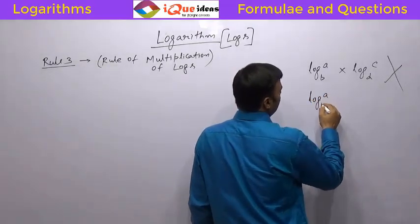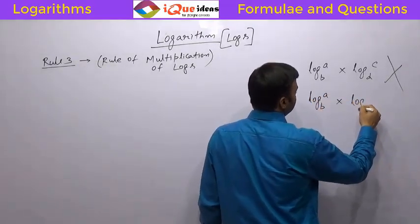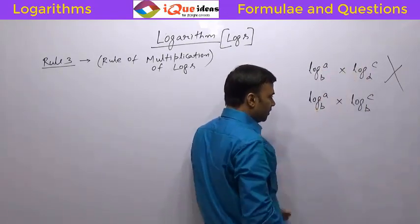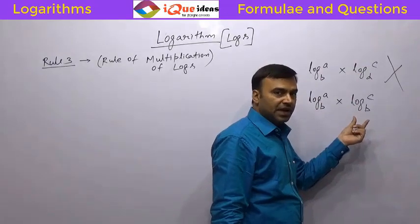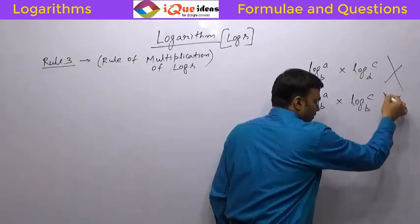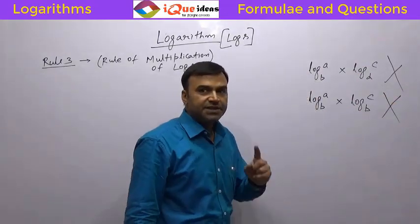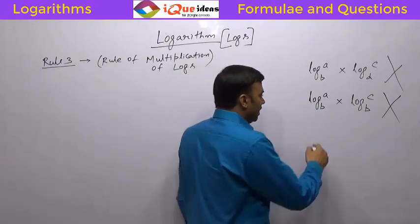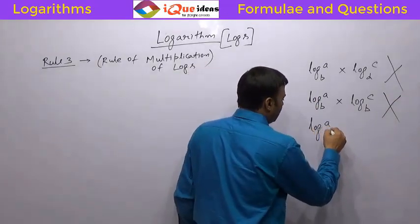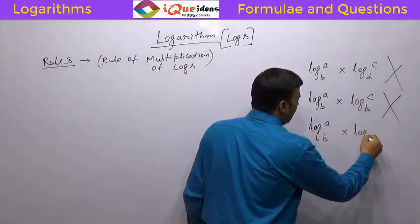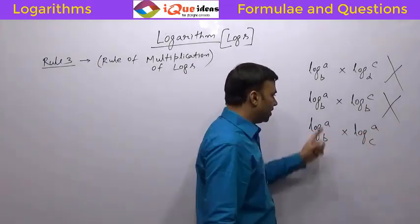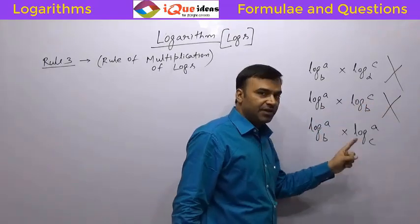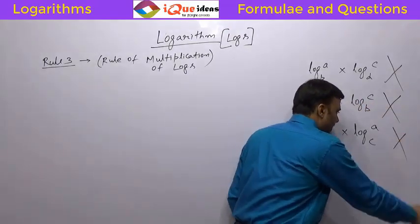Can we say anything about log A to the base B into log C to the base B? Here there was no relation between the numbers and the bases, but here there are two logs and the bases are same. Can we say anything about them? No. Be very careful — there is a very specific situation in which log multiplication is possible. Consider another example: log A to the base B into log A to the base C. Here the bases are same, but we still do not have any rule. Here the numbers are same — do we have anything? No — there is no rule here either.